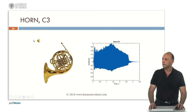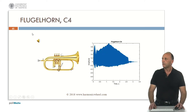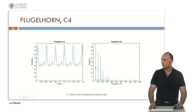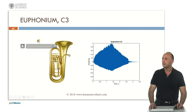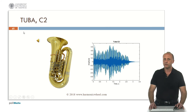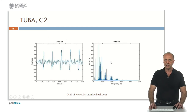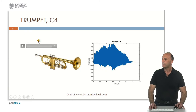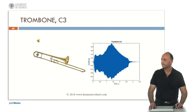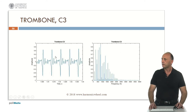Now the brass instruments. The horn, C3 — the envelope, waveform, and spectrum. Flugelhorn, C4 — envelope, waveform, and spectrum. Euphonium, C3 — envelope, waveform, and spectrum. Tuba, C2 — the envelope, waveform, and spectrum, with many harmonics. Trumpet, C4 — the envelope, waveform, and spectrum, with many harmonics too. Trombone, C3 — envelope, waveform, and spectrum. It has many harmonics as well.